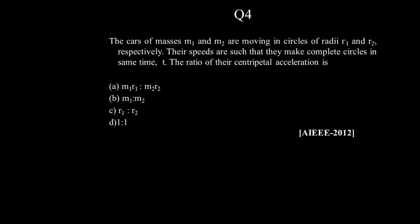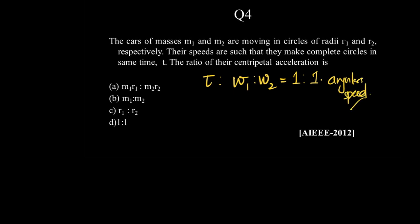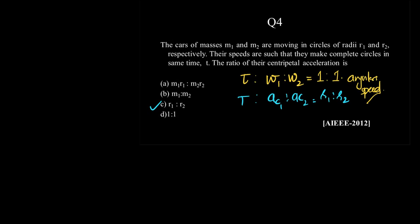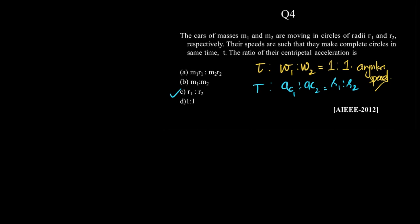When the same time period T is given, we know that omega1 equals omega2, giving a ratio of 1:1. This is the standard result we derived for angular speed. Thus, the ratio of centripetal acceleration for the same time period T — ac1 to ac2 — will be equal to r1 to r2. So the correct option is option C.